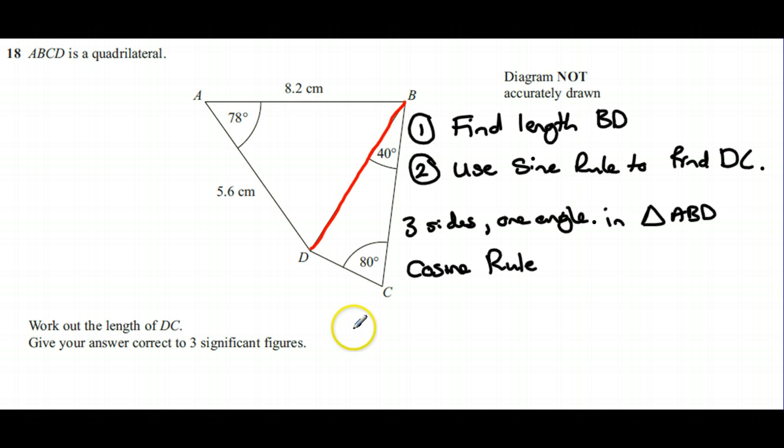First of all, we need our cosine rule. We're finding a side, so the best way to write it is the way it's given in the formula book: a² = b² + c² - 2bc cos A.